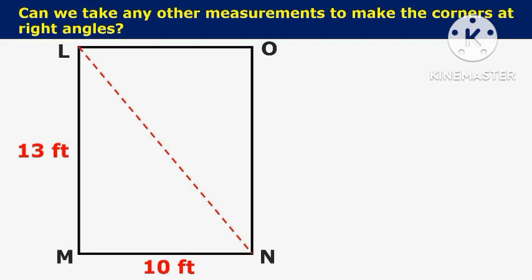You can fix all the corners at right angles easily. We can calculate the length LN by using the Pythagorean theorem. Here, LN and MO equal 16.4 feet.